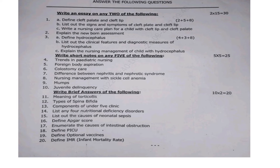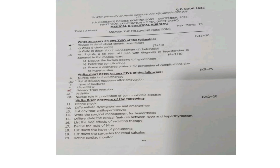Brief answers: 11th — meaning of torticollis; 12th — types of spina bifida; 13th — components of under-5 clinic; 14th — list any four nutritional deficiency disorders; 15th — causes of neonatal sepsis; 16th — define APGAR score; 17th — enumerate the causes of intestinal obstruction; 18th — define PICA; 19th — define optional vaccines; 20th — define IMR (Infant Mortality Rate). All 10 questions must be answered, each 2 marks, 10 × 2 = 20 marks.